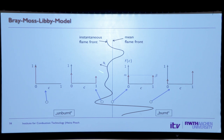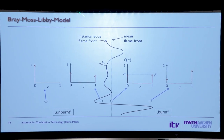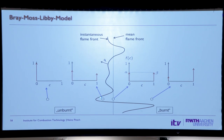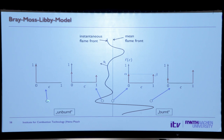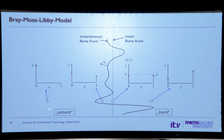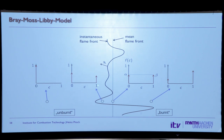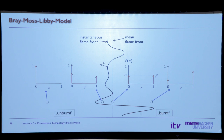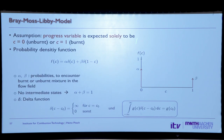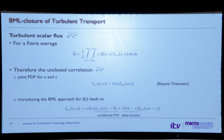Consider a turbulent flame with a mean flame front position. If you measure the progress variable c many times at locations along the flame, you find: far ahead of the flame the probability of finding burnt gas is zero; closer to the flame the probability increases; exactly at the mean flame front position the probabilities of finding burnt and unburnt are equal; and far behind the flame the probability of finding burnt gas dominates. The PDF is fully described except for the unknown parameter alpha.